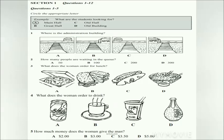You will hear a number of different recordings and you will have to answer questions on what you hear. There will be time for you to read the instructions and questions, and you will have a chance to check your work. All the recordings will be played once only. The test is in four sections. Write all your answers in the listening question booklet. At the end of the test you will be given 10 minutes to transfer your answers to an answer sheet. Now turn to Section 1 of your question booklet. Section 1: two students meet on the university campus and start a conversation. First, look at questions 1 to 5. For each question, four alternatives are given. Decide which alternative — A, B, C, or D — best fits what you hear on the tape and circle the appropriate letter.